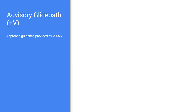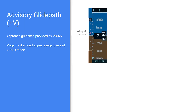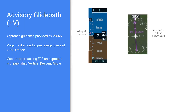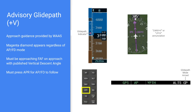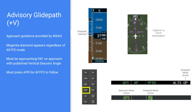The plus-V advisory guidance looks identical to LPV glide path — same magenta diamond — but appears on approaches without LPV minimums that do have LNAV minimums and a published vertical descent angle. You'll see the LNAV+V indication on the CDI. Same logic: press the approach button to get the autopilot to follow the guidance; glide path mode arms, then captures. There's a gotcha here — these approaches have an MDA, so you must ensure you don't descend below the MDA.